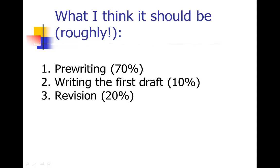This is roughly how I allocate my time when I'm writing a piece. You'll find exactly what works for you—it doesn't have to be exactly these percentages. But I've found this is the most efficient way to write if I divide my time this way. So in the next couple of modules, I'm going to go through each of these steps and tell you exactly what should happen in each of them.